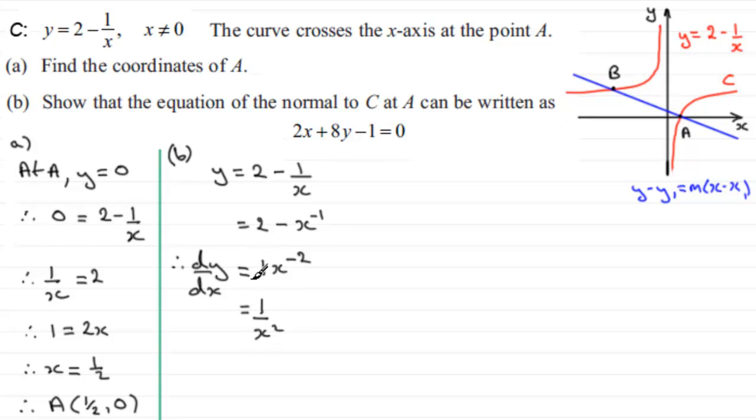So, that's the gradient then, in general, at any point on this curve C. So, we're looking at the point A. So, we can say that when x equals a half, at A, we can see what dy dx is going to be.